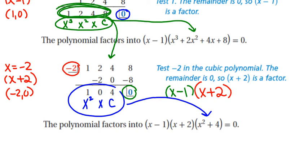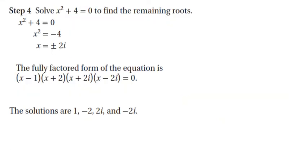Going on to the last step here. We need to find out, with that last factor, what are those two remaining roots? So we're going to solve by undoing. We're going to subtract four and then square root it. And we get plus or minus two i. These are called complex roots.